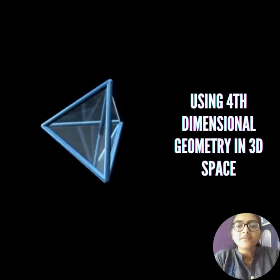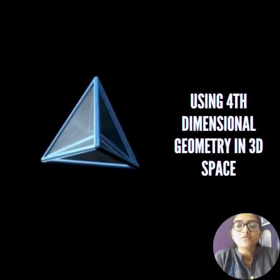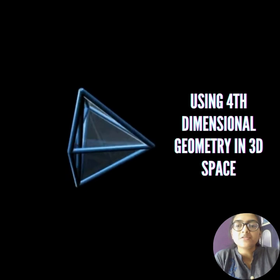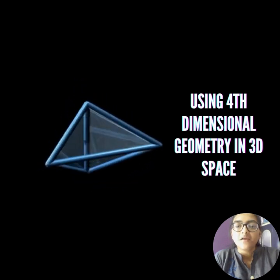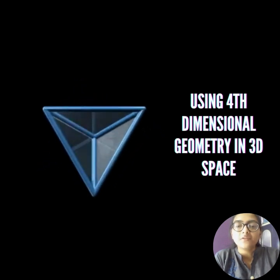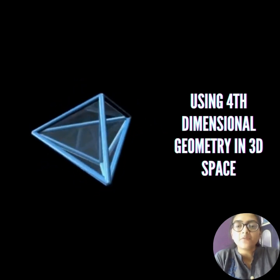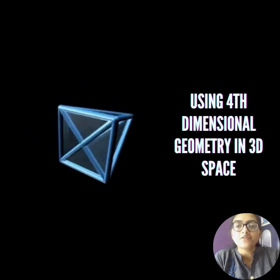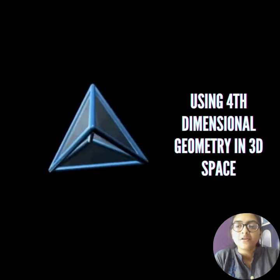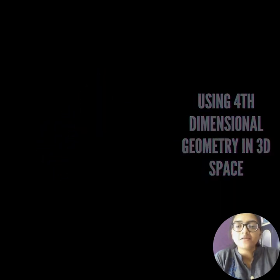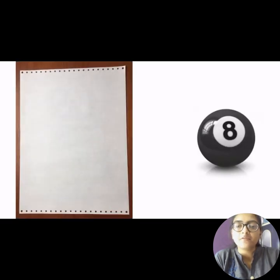One way to make it easier is by using 4th dimensional geometry in 3D space, and we can visualize that by comparing it with the situation where a 3D object is visualized in a 2D space.